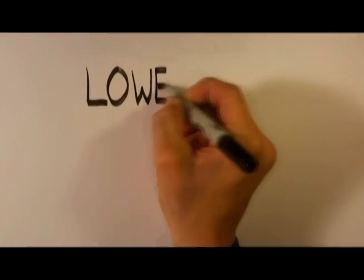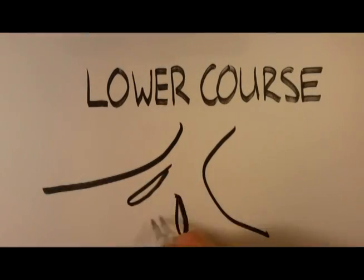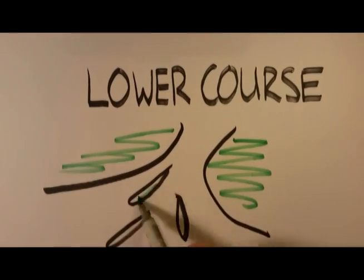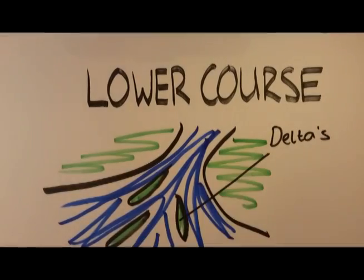The third part of the river is the lower course, which has a gentle slope and is almost flat. The river channel is usually at its widest and deepest here, because the amount of water flowing in the river is at its greatest.